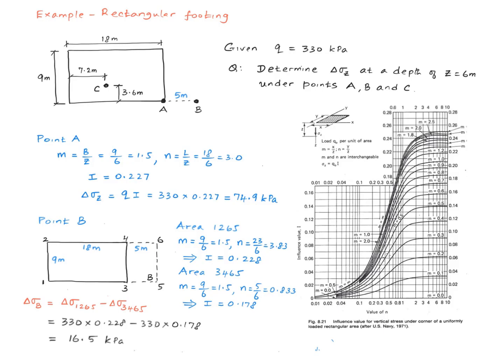We find the corresponding influence values for each of the rectangles. I got 0.228 for the long one and 0.178 for this little rectangle. So now we apply this equation, and I get a value of 16.5 kilopascals for the change in vertical stress below point B.